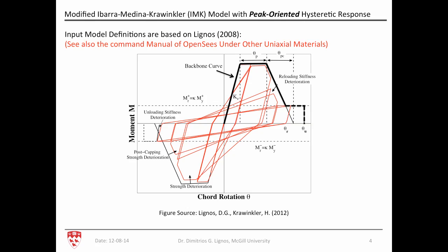The first model is the modified Ibarra-Medina-Krawinkler model with peak-oriented hysteretic response. To define it, you need to define a backbone curve — specifically elastic stiffness, pre-capping rotation capacity, post-capping rotation capacity, a residual strength region, and an ultimate deformation capacity in case of complete loss of strength. The advantage of this model is that it can deteriorate in strength, post-capping strength, reloading stiffness, and unloading stiffness, with four parameters that control the energy dissipation capacity of the component.